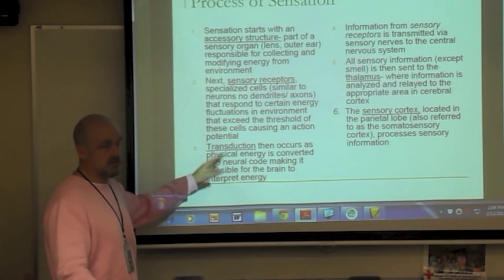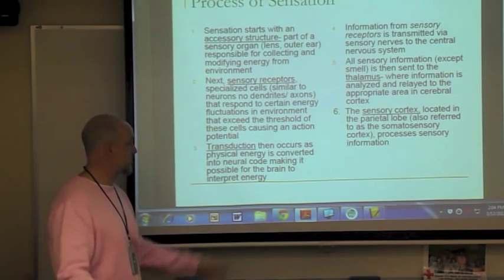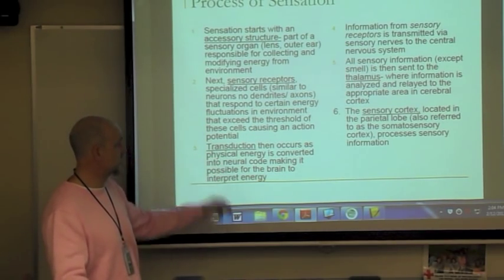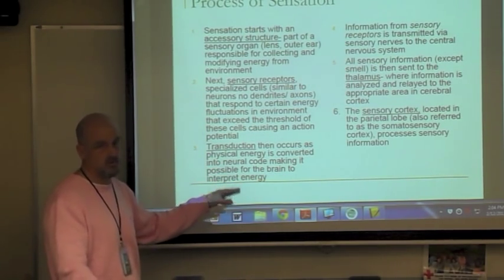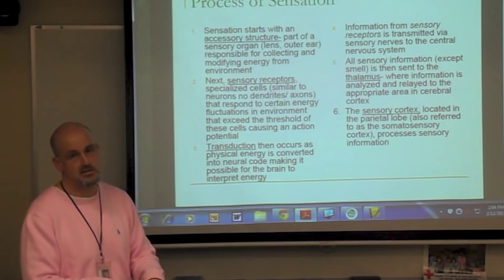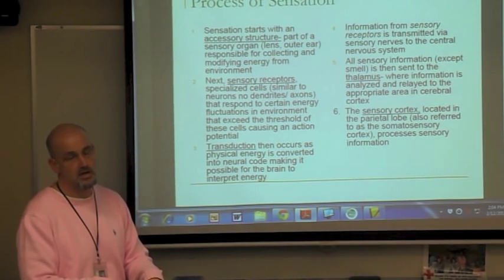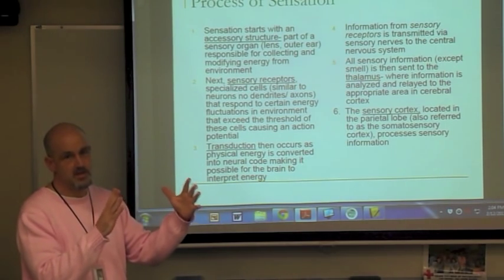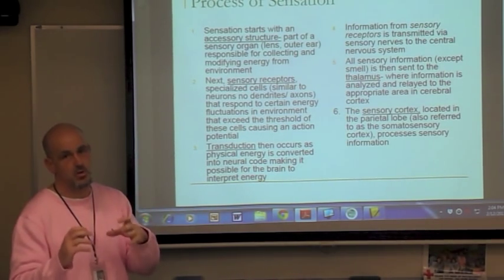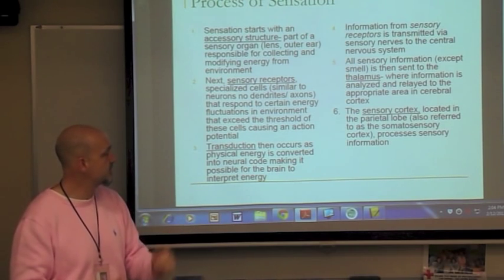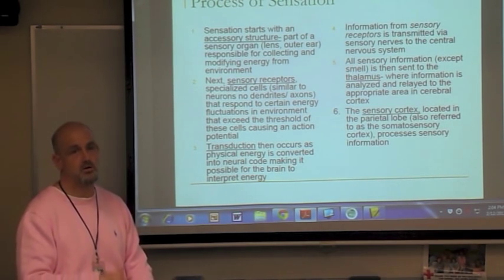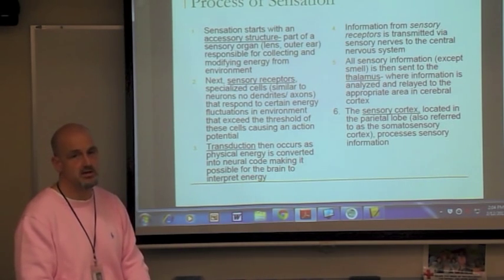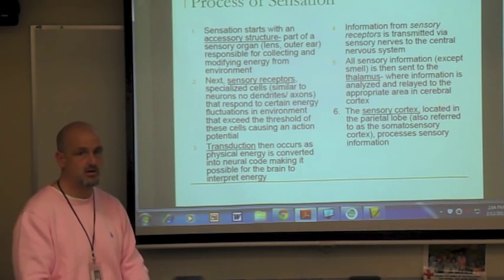Transduction is a key word you'll see throughout the course. Transduction occurs in the brain, which converts physical energy into neural code. The brain has to understand things in a neural way. This is very similar to what a computer does — taking whatever you type and converting it into binary code of zeros and ones.